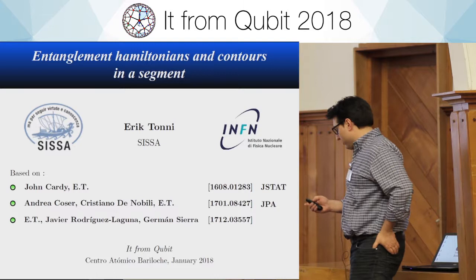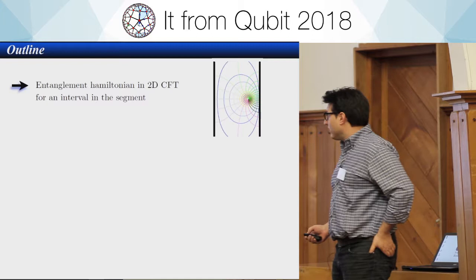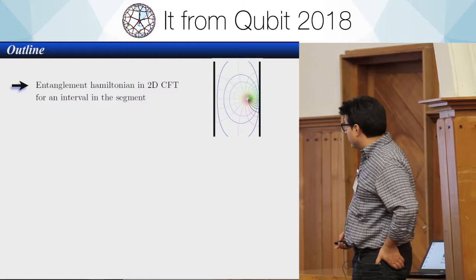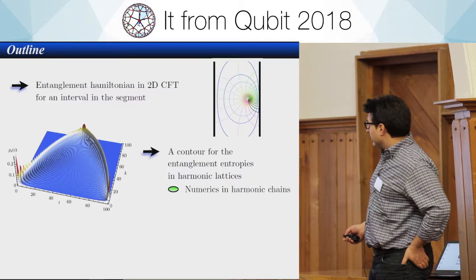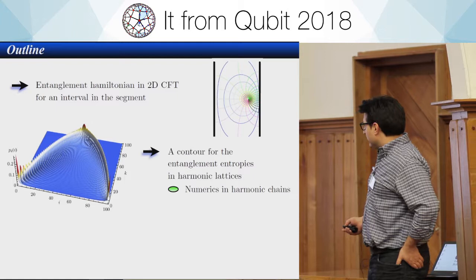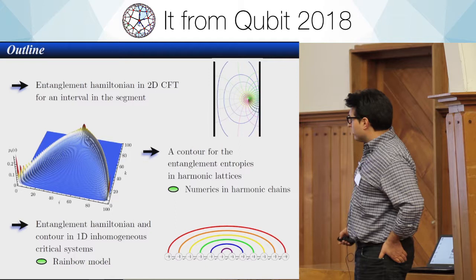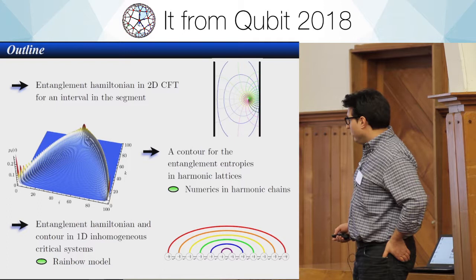The outline of my talk is the following. In the first part, I will discuss how to construct the entanglement Hamiltonian for an interval in a segment in a general CFT that is homogeneous in the space direction. In the second part, I will discuss how to construct the contour function for entanglement entropy in harmonic lattices in generic dimension, and provide numerics for harmonic chains. Finally, I will combine these two results to construct the entanglement Hamiltonian and contour in the case of an inhomogeneous chain — particularly the rainbow model.